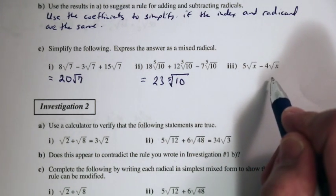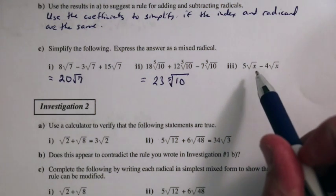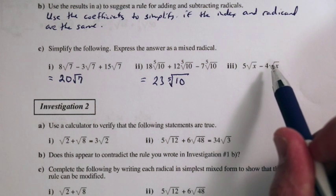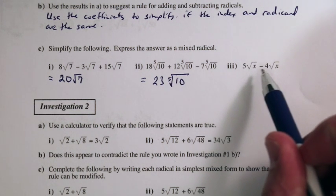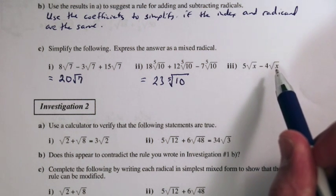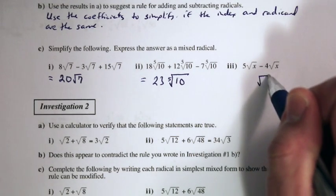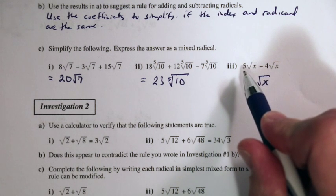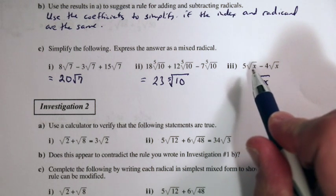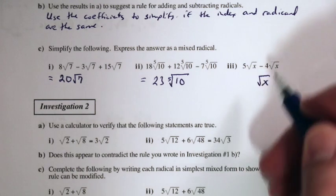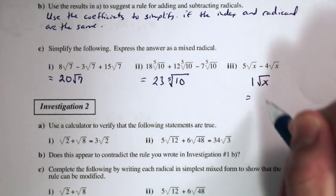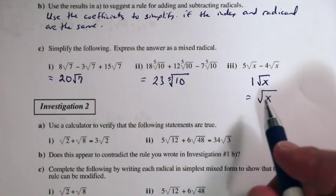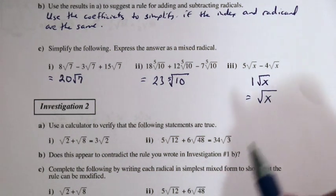In part three, even though we don't know the numerical value of x, we can see the index is the same — it's a square root — and the radicand is also the same, x. Using the coefficients, we have 5 of root x minus 4 of root x, which leaves 1 of that quantity. When we have 1 of a quantity it's not necessary to write that 1, so that equals the square root of x.